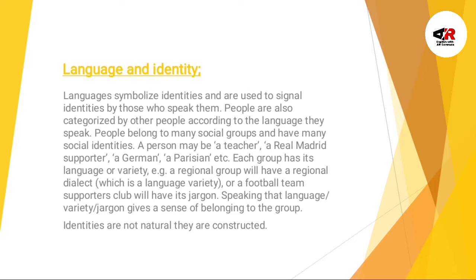For example, a person may be a teacher, a Real Madrid supporter, a German, a Persian, etc. Each group has its own language or variety by which you can identify them. For example, an original group will have its own dialect — a language variety. A football team's supporters have their own identity and their own jargon. Jargon is vocabulary used in a specific field, and on the basis of jargon you can identify which field someone belongs to.